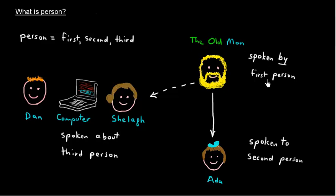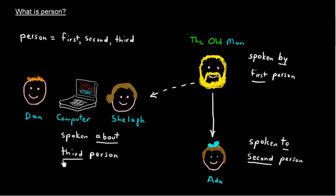First person refers to the person that the sentence is spoken by. Second person refers to the person spoken to. And third person refers to the person spoken about. And some quick examples are: I, you, and he, she, and it.